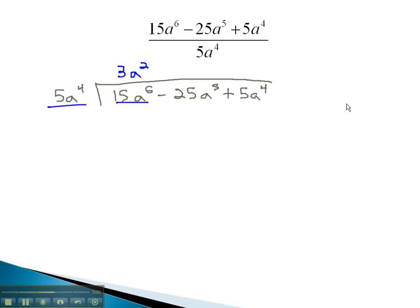Again, if you're not sure, feel free to show your division off to the side. We can now multiply 3a squared times 5a to the 4th to get 15a to the 6th, changing the sign so we can combine to get 0.